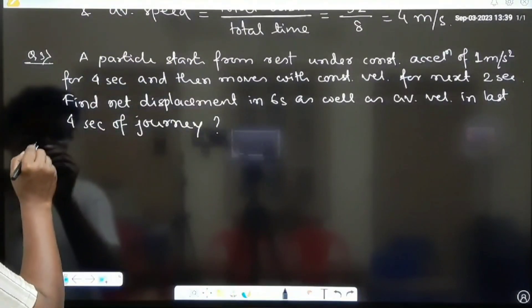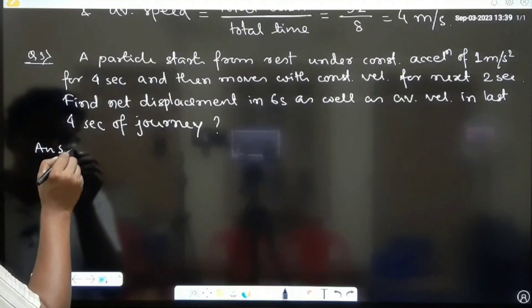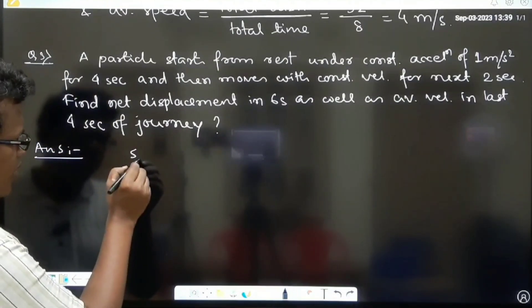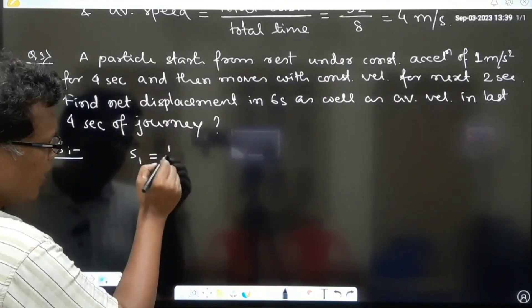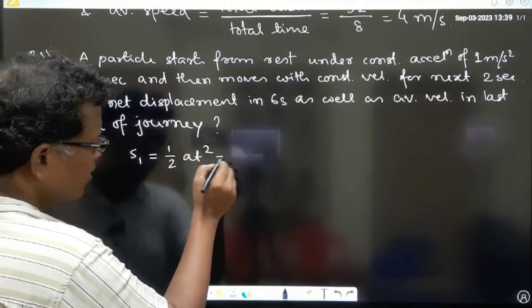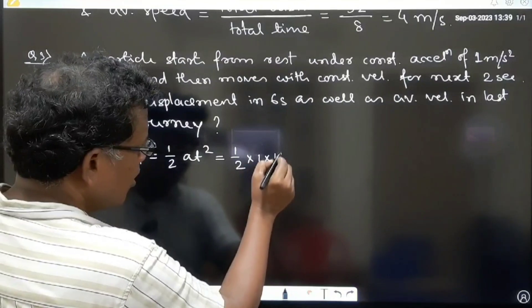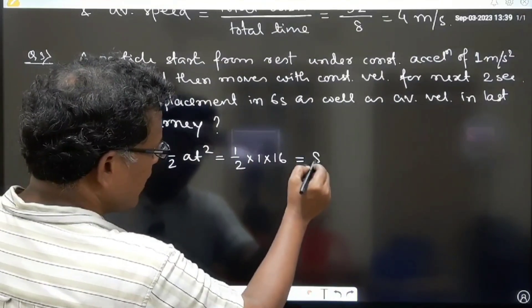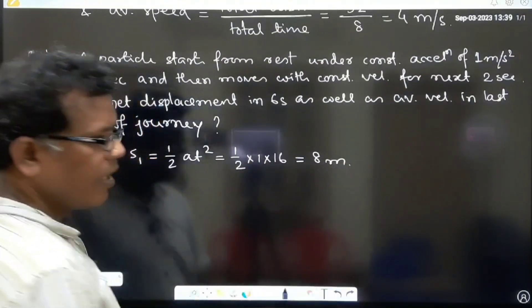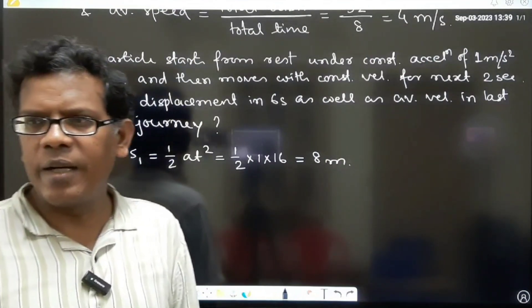The first displacement in 4 seconds that will be definitely half a t square, right? So it will be half into 1 into 16. So this is 8 meter is the displacement in accelerated motion.